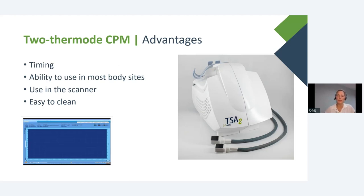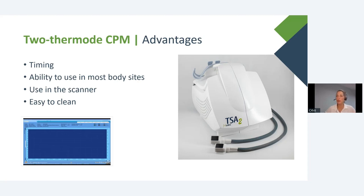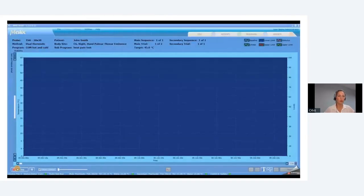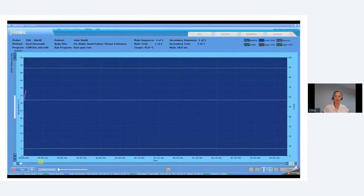Then there is the TSA-II Neurosensory Analyzer — recently introduced, sitting next to Masha and Roni — which can also serve as test or conditioning stimulus. Using two thermodes for CPM has advantages: precise timing of test and conditioning stimuli, no watching the stopwatch, ability to use many different body sites — not all sites can be placed in a cold bath — and usability in the scanner with MRI-compatible thermodes. In these hygienic times, thermodes can be cleaned easily with an alcohol swipe.